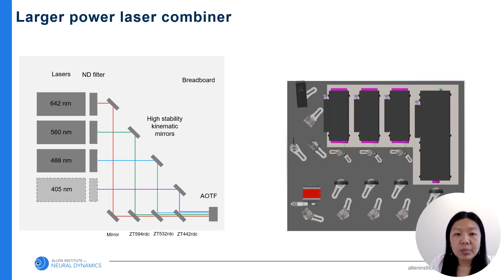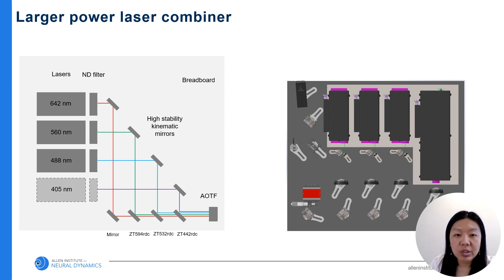We built a custom laser combiner with 1W lasers. Right now we have three lasers: 642, 560, and 488 nm. We are still exploring the addition of a 405 nm laser. All lasers use an AOTF, or acousto-optic tunable filter, to modulate the output power.